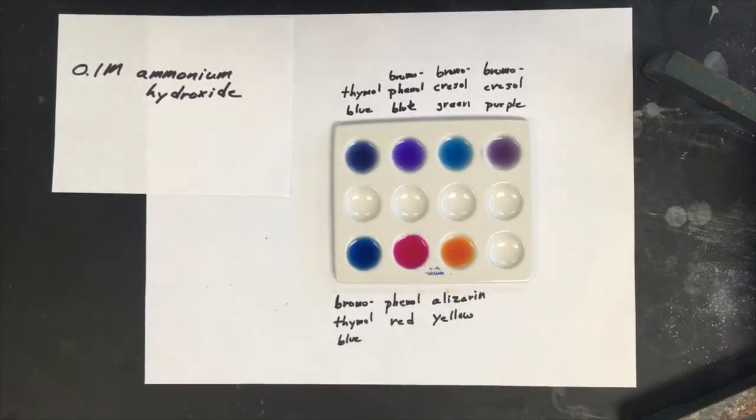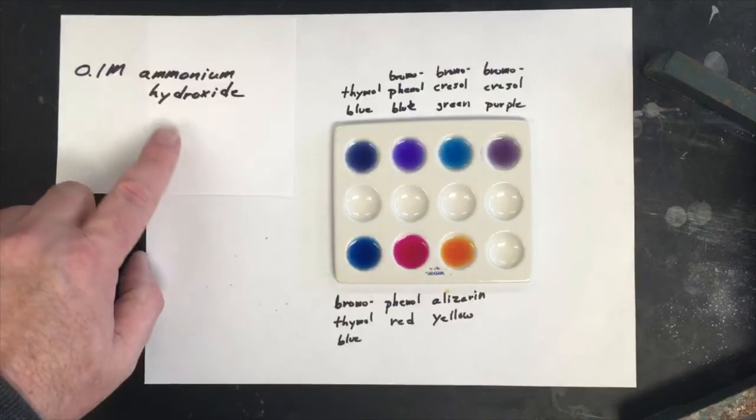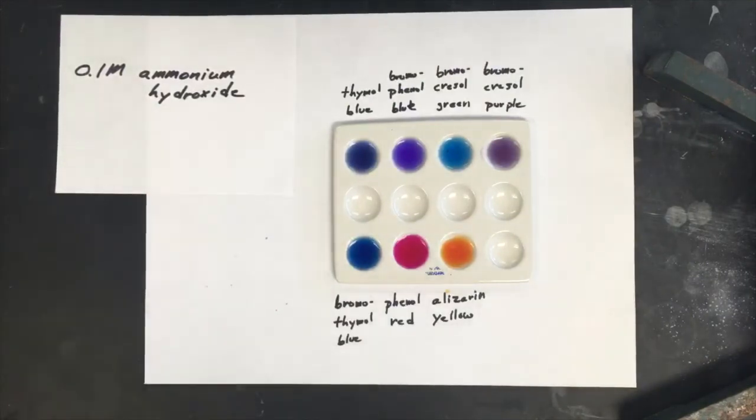Here's the next sample. We have 0.1 molar ammonium hydroxide. A lot of times that's also just written as 0.1 molar ammonia. Whenever ammonia is dissolved in water, it undergoes a reaction. And so that's why you can kind of see these two different names.